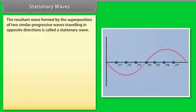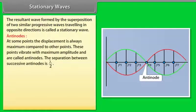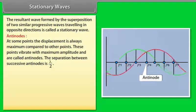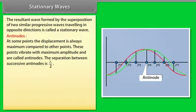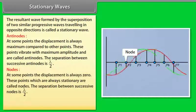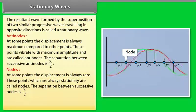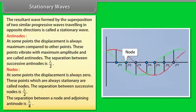The resultant wave formed by the superposition of two similar progressive waves traveling in opposite directions is called a stationary wave. Antinodes: At some points, the displacement is always maximum compared to other points. These points vibrate with maximum amplitude and are called antinodes. The separation between successive antinodes is λ/2. Nodes: At some points, the displacement is always zero. These points, which are always stationary, are called nodes. The separation between successive nodes is λ/2. The separation between a node and an adjoining antinode is λ/4.